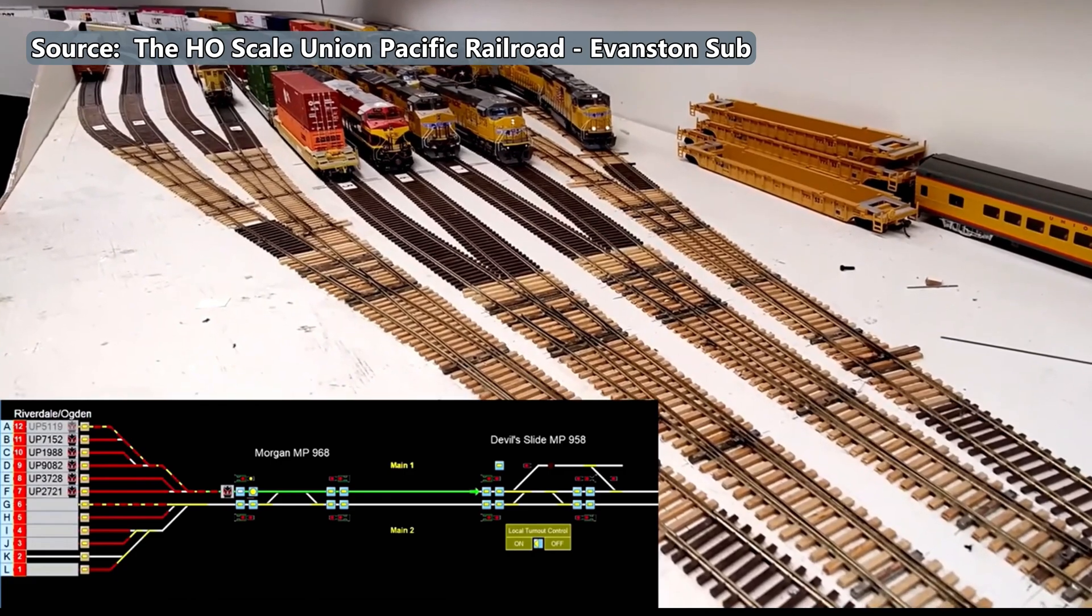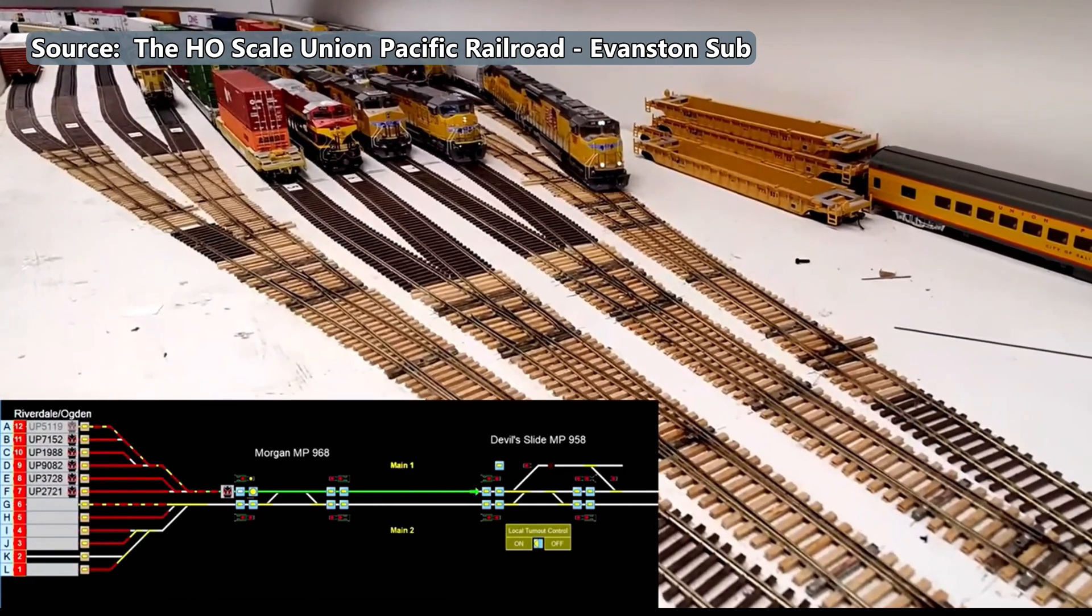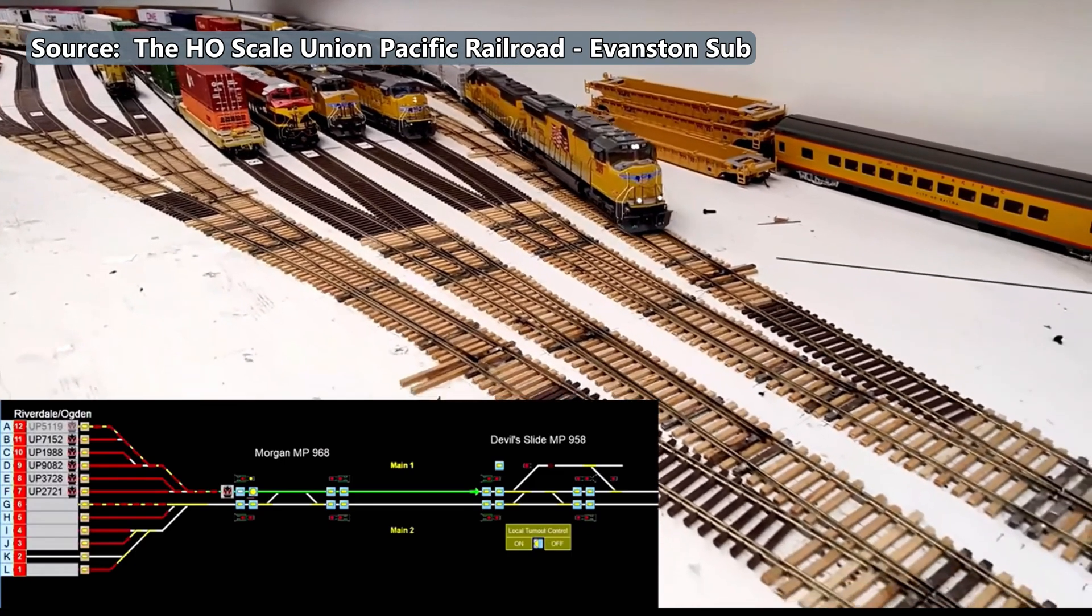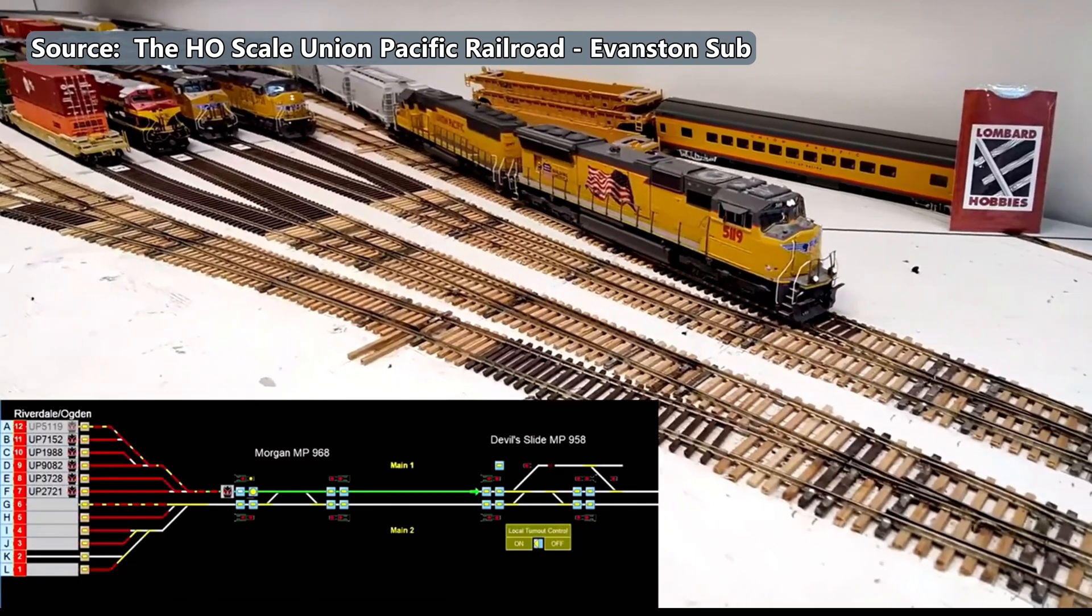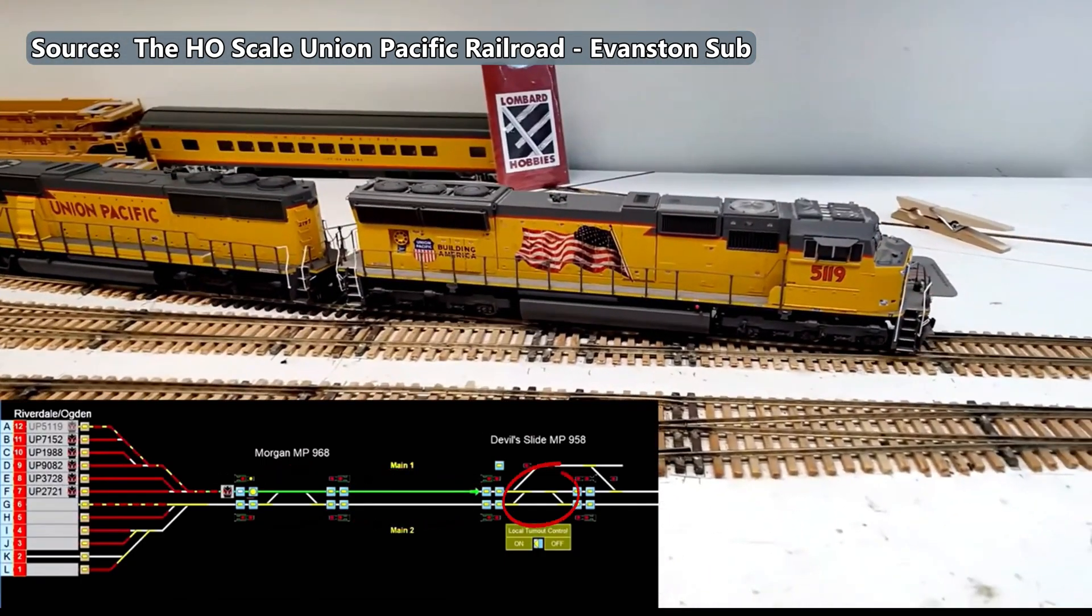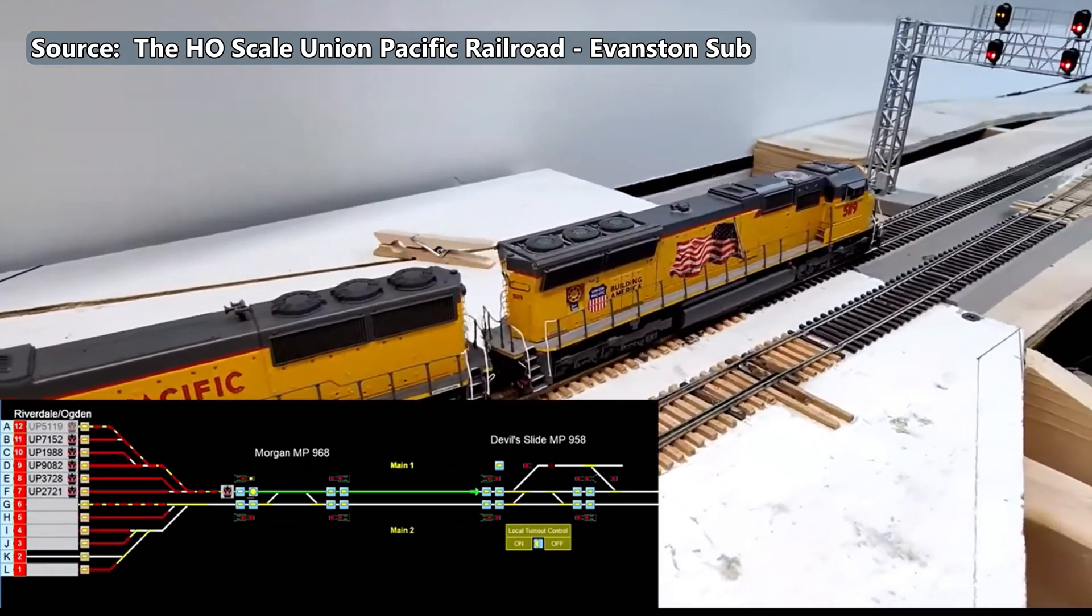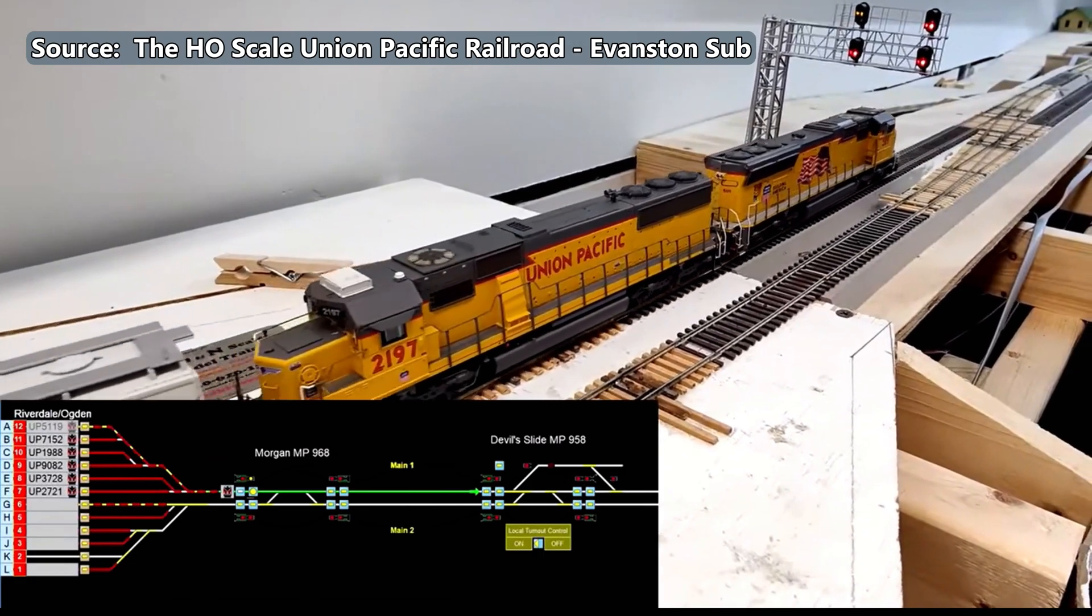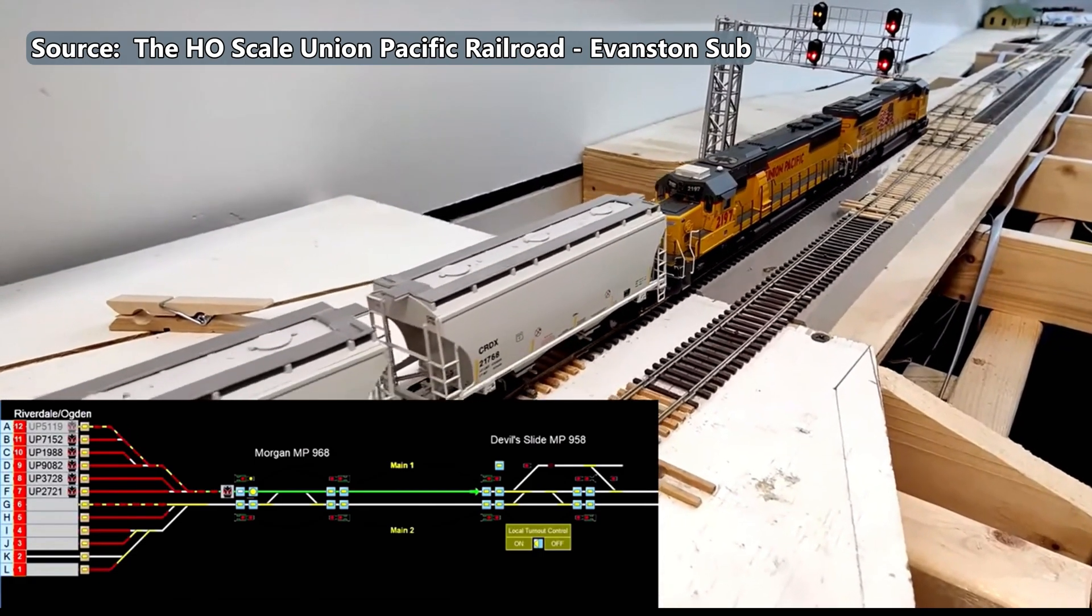As the train advances, you can see here where the throat changes to occupied on the dispatcher's screen. In the interest of time, we're going to speed this up a little bit. If we look down at the dispatcher's screen, which is how Daryl manages his operation sessions, you can see the individual blocks circled there. And the dispatcher has given this train the clearance to go through the next two blocks. And as he passes into the next block, you'll see it turn red, showing that it's occupied.